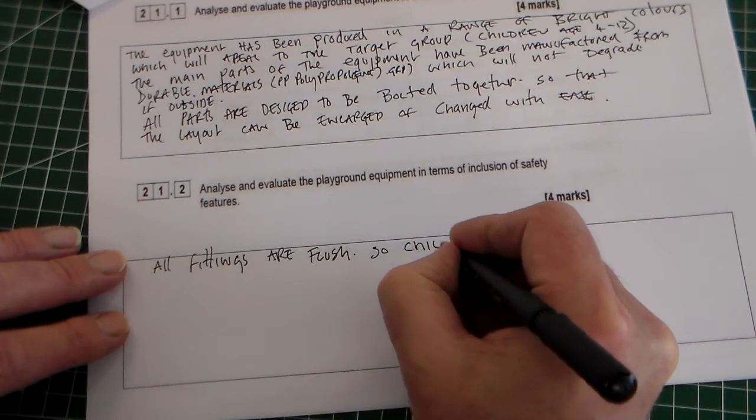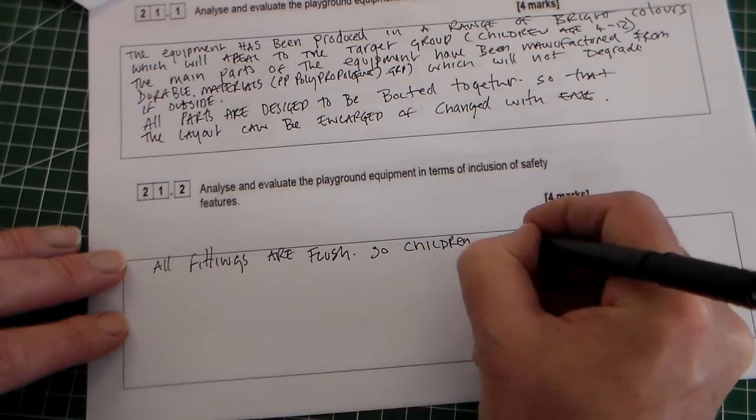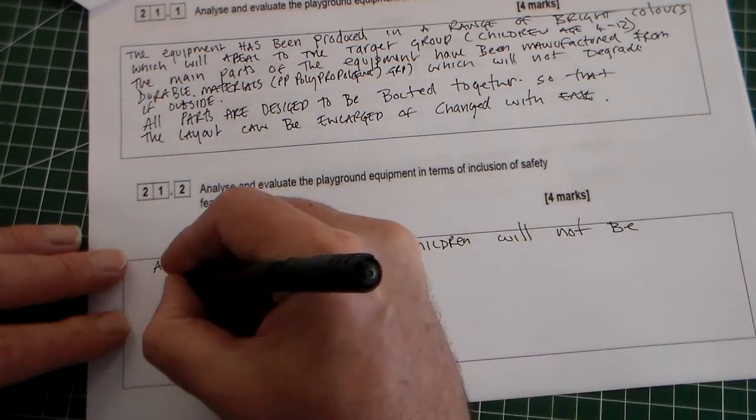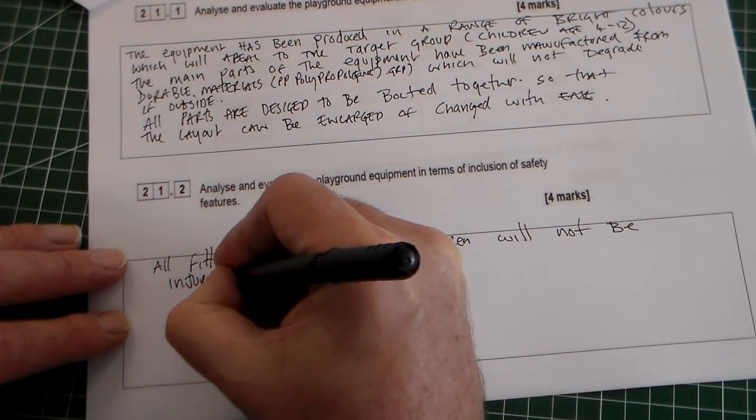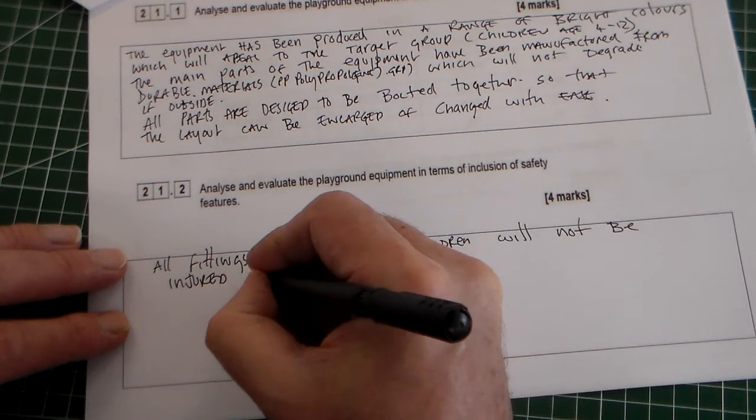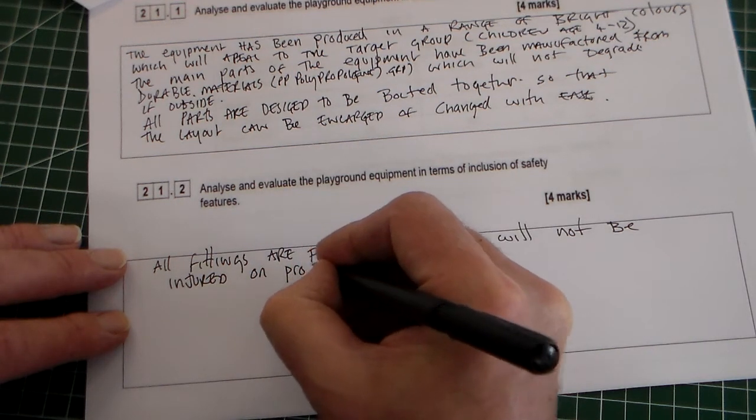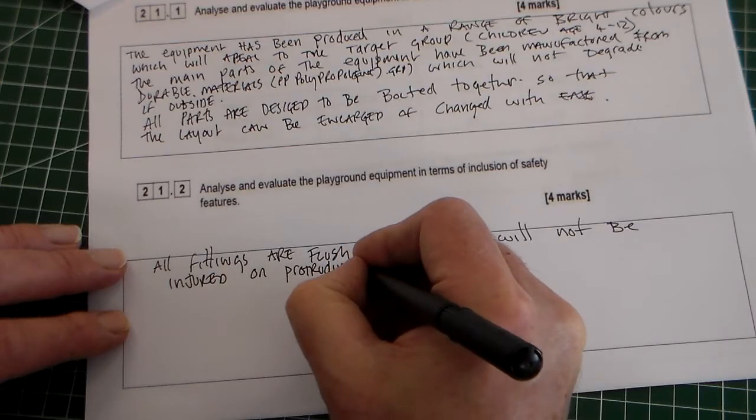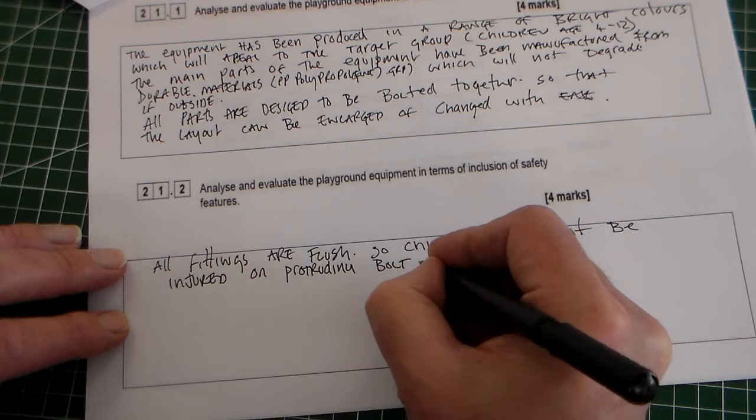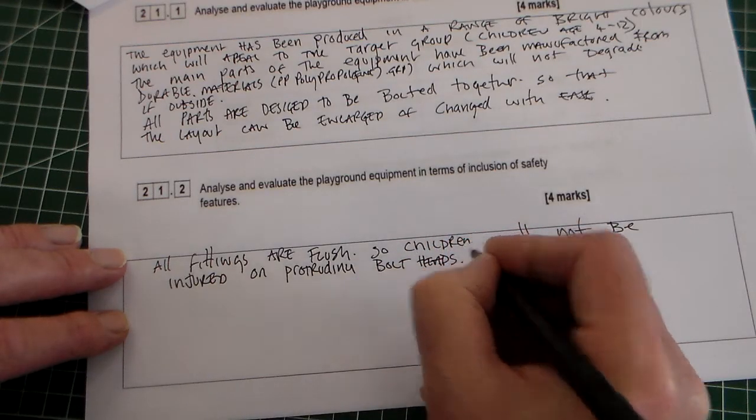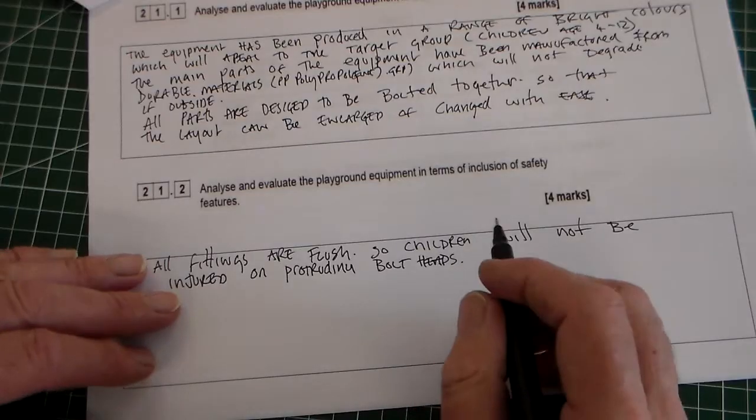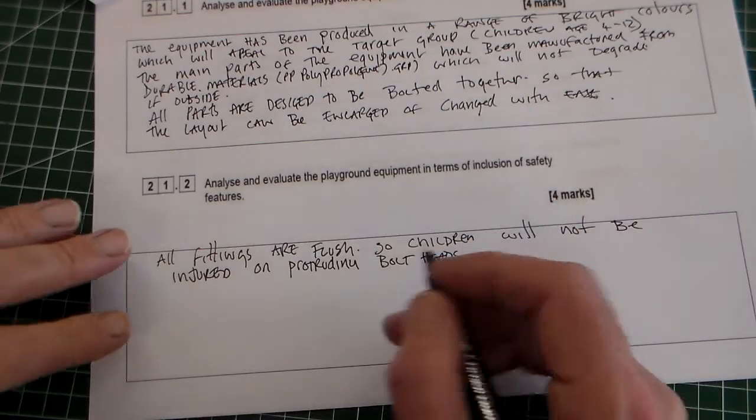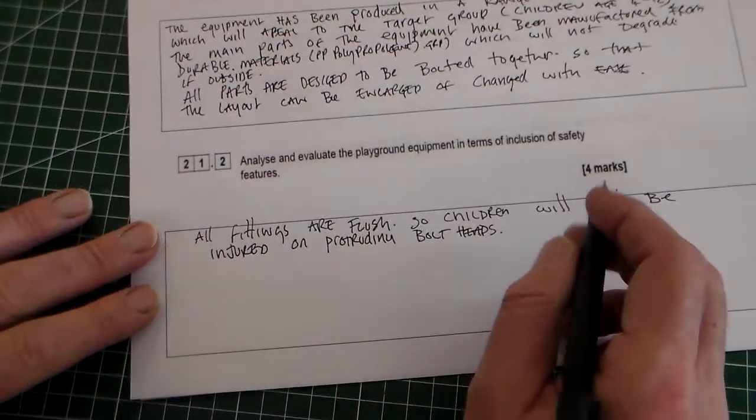So children will not be injured on protruding bolts or bolt heads. So they're just making sure that there's no bits sticking out that children are going to catch themselves on sliding down a slide or something and then catch on a bolt or something like that. So I think that would be two marks there.